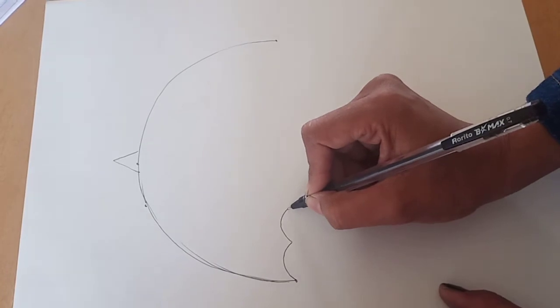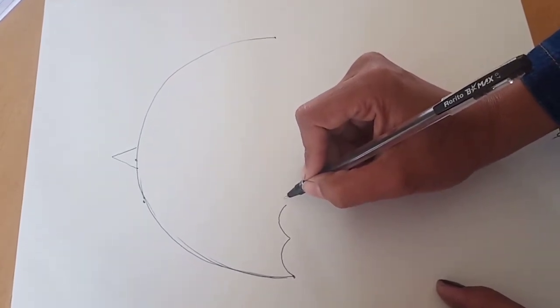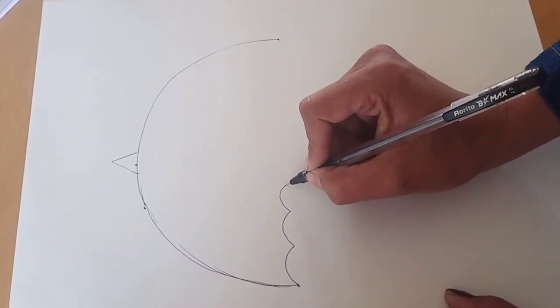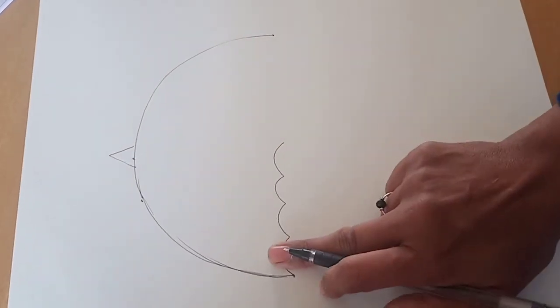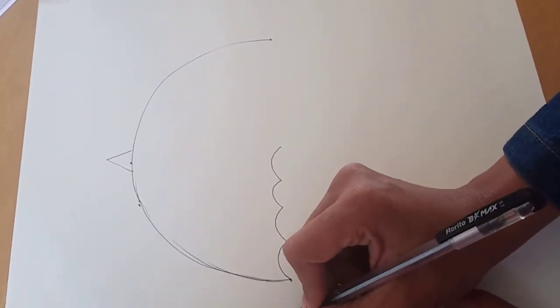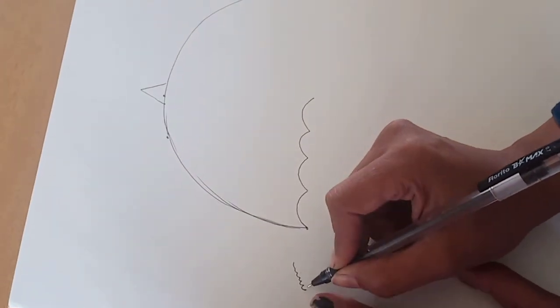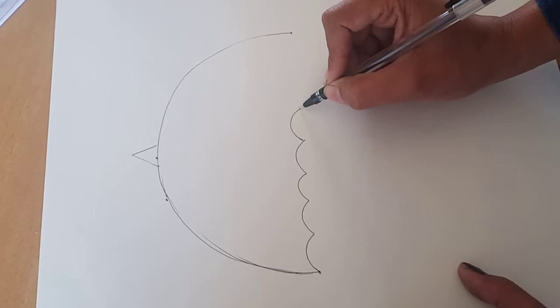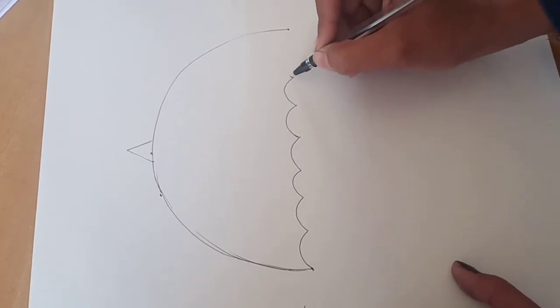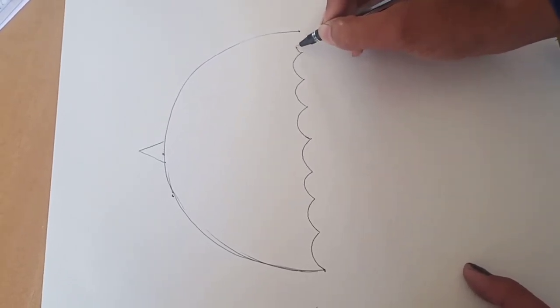This should be the same size and it should be more than one finger distance. Don't draw like this with the lines too close. Draw the semicircles like this up to the end of this umbrella.